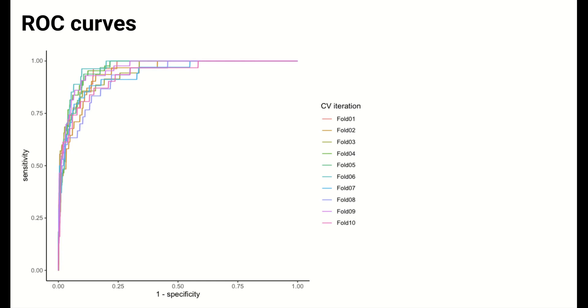We can look at the ROC curves resulting from the ten different cross-validation iterations together to get a sense of the variability and uncertainty in the estimation of these curves. Each colored line corresponds to one of the ten cross-validation iterations.